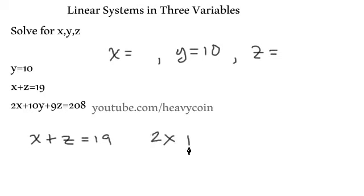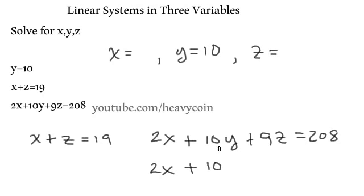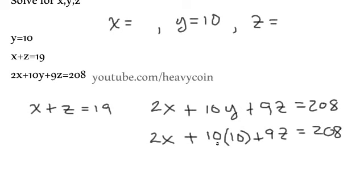We have 2x plus 10y plus 9z is equal to 208. So we don't know what x is, so I'll rewrite that, plus 10. We do know what y is, y is 10, so I'm going to put a 10 here, and we don't know what z is. So we just kind of rewrite the equation. Okay, simplify this down so this becomes 100, 10 times 10 is 100, right? And then I'm going to take that 100 to the other side over here.